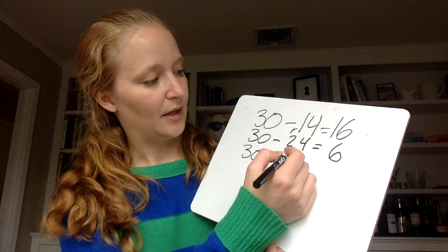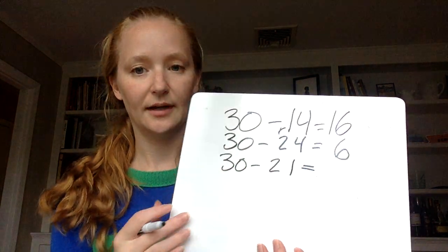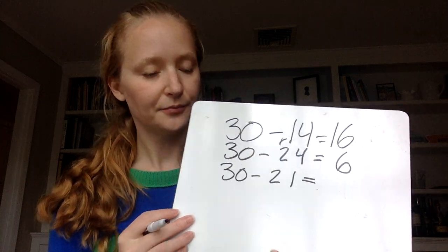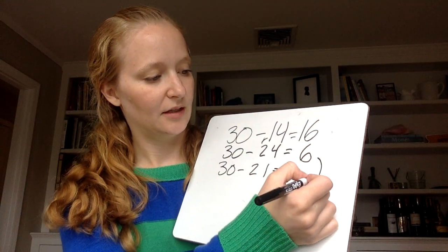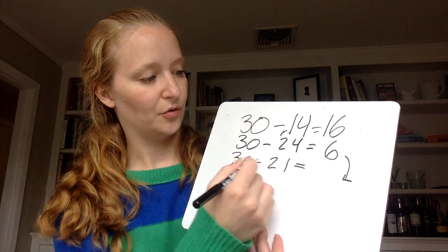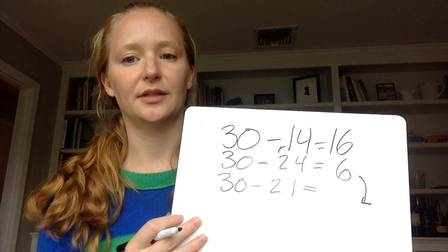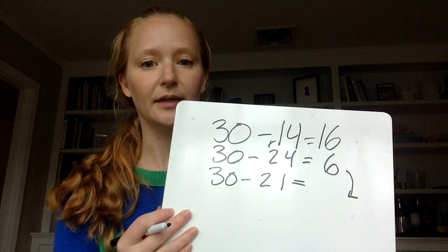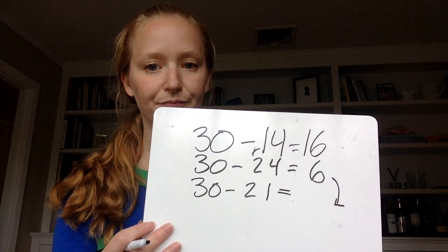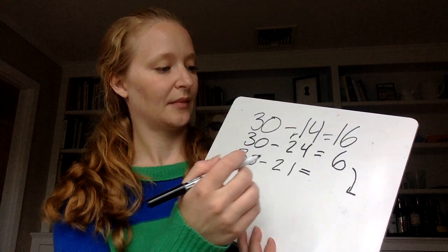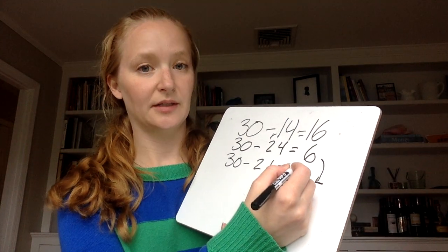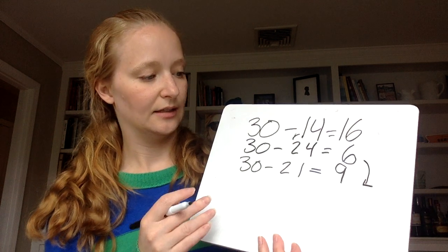So if I'm looking and I know that between 24 and 21, that's a difference of 3, then I know my answer here is also going to be a difference of 3. Now is it going to be 3 more or 3 less? That's right. It's going to be 3 more. So 6 plus 3 is 9.